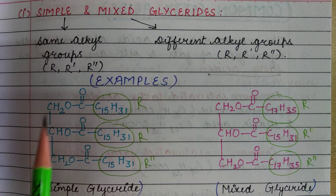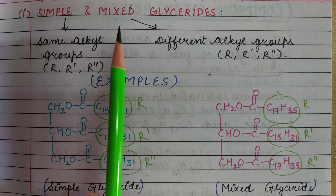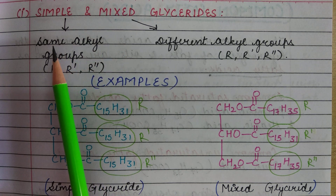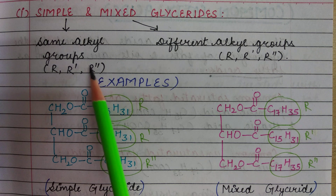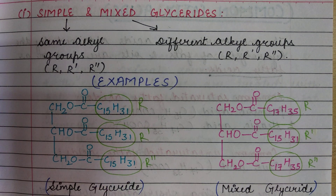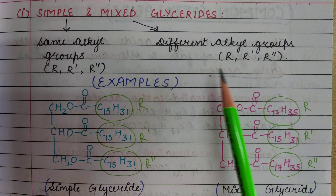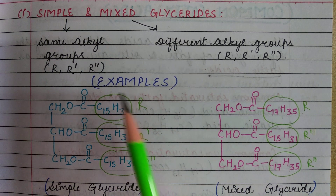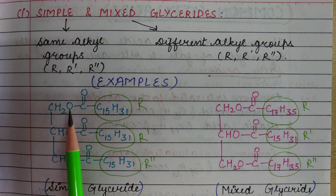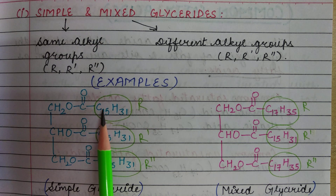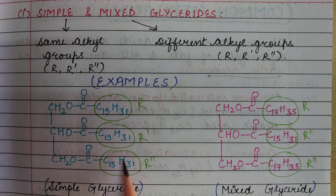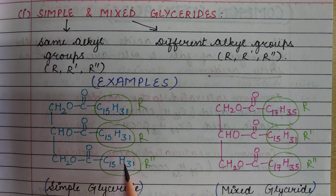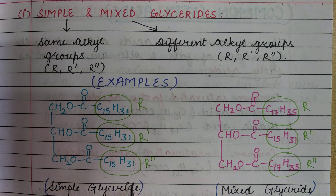Now we have simple and mixed glycerides. Simple glycerides have the same alkyl groups — that means R, R', and R'' are all the same. For example, if all three positions have C15H35, then all three R groups are identical, making it a simple glyceride.